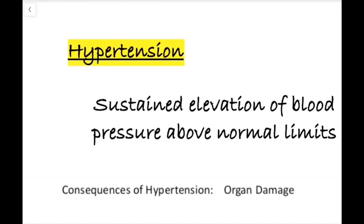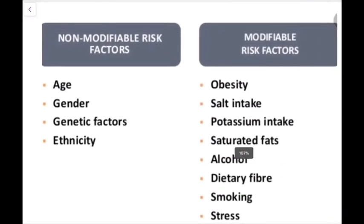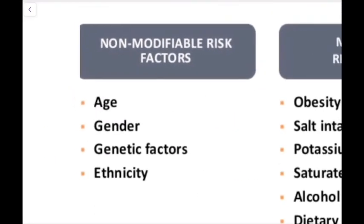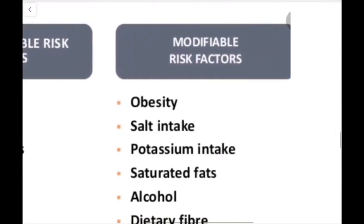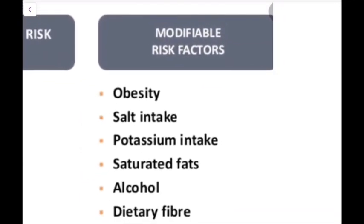The risk factors for hypertension can be divided into non-modifiable and modifiable factors. Non-modifiable risk factors are things you cannot change, such as age, gender, genetic factors — if you have a family member with hypertension you are at higher risk — and ethnicity, whether you are Caucasian or Asian.